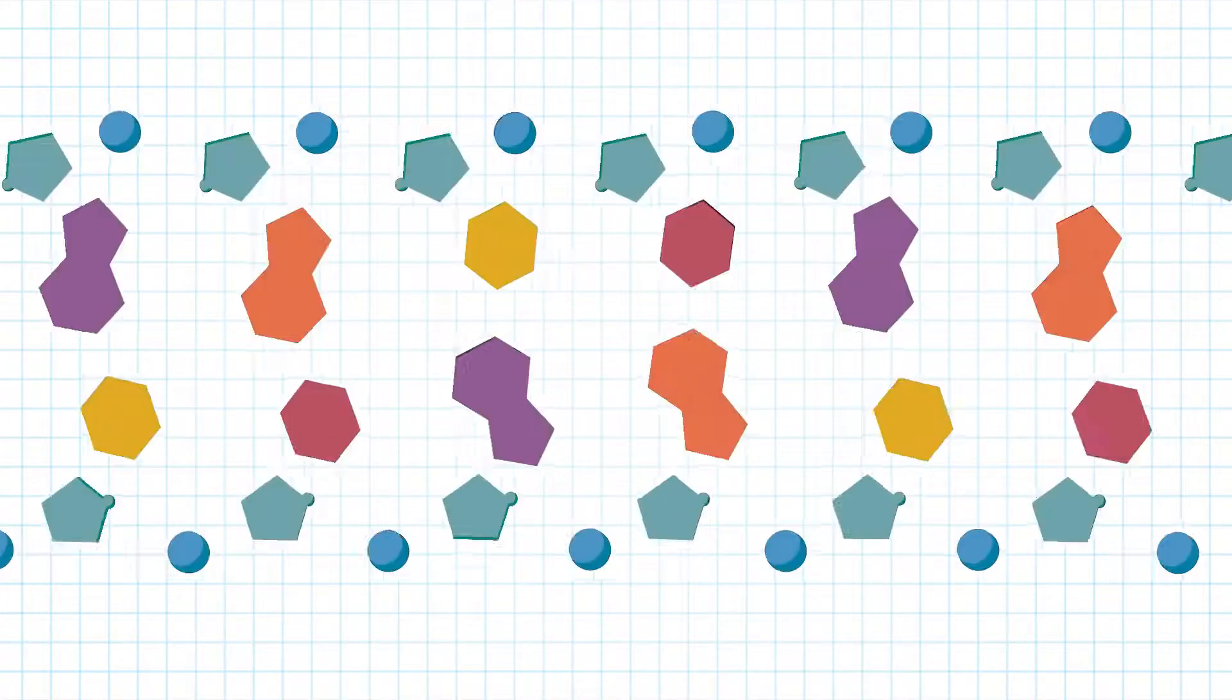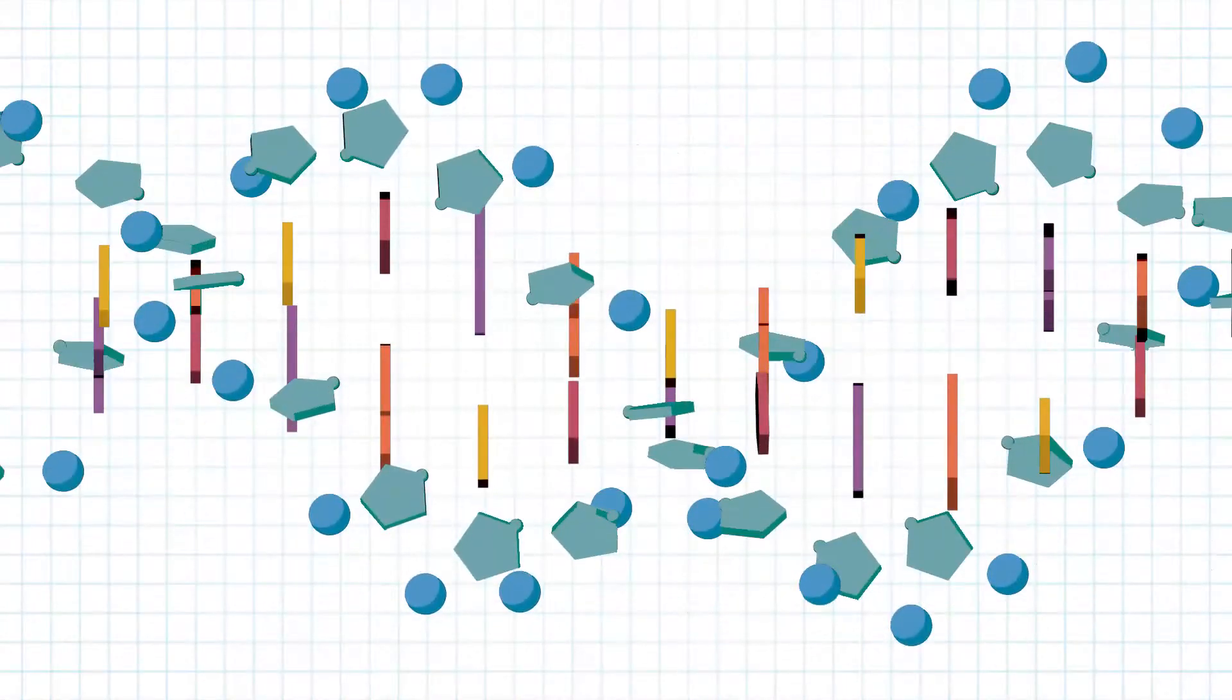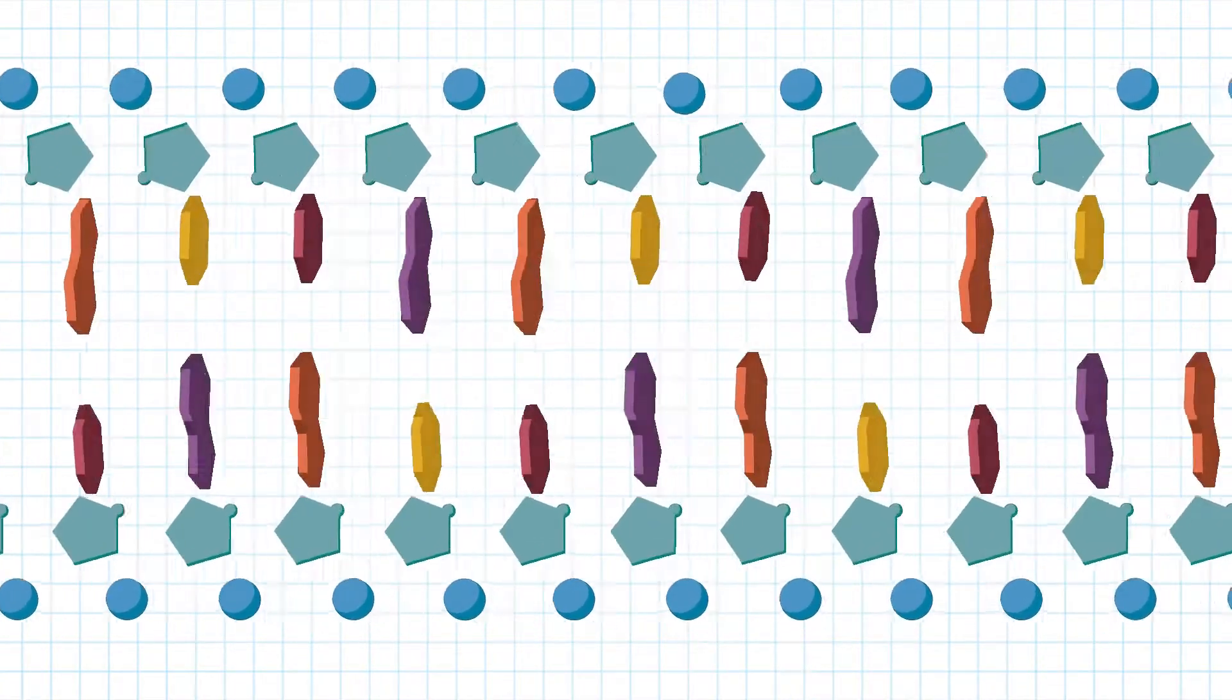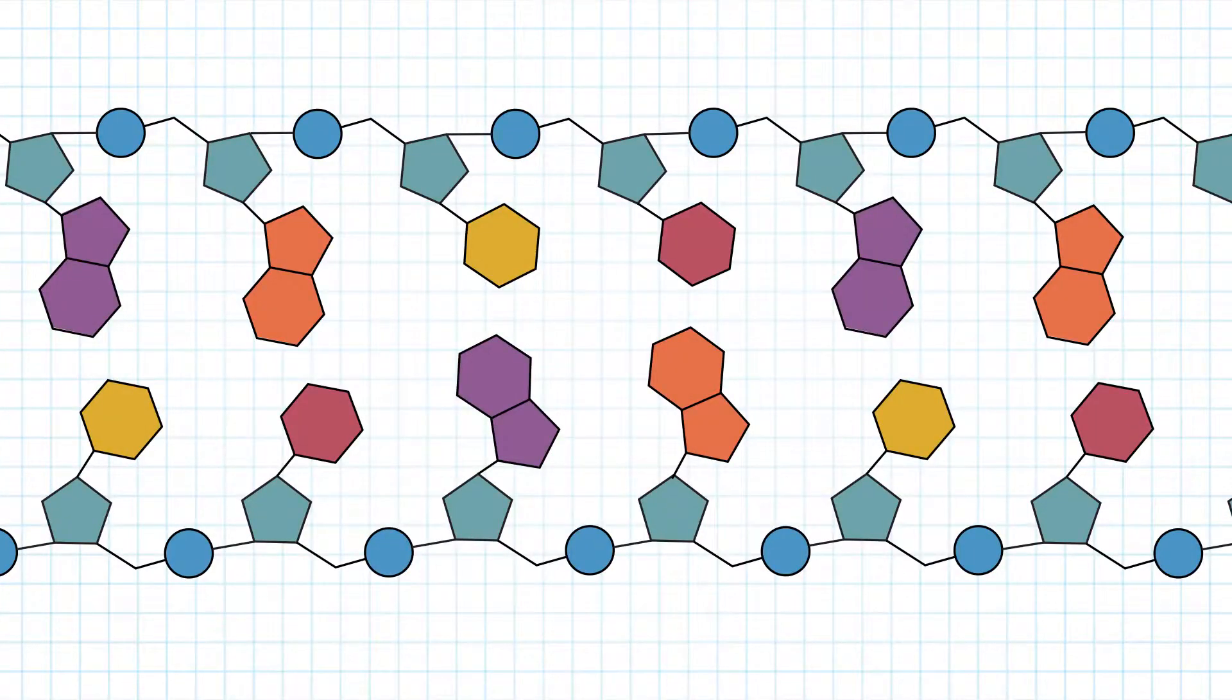Keep in mind that this double-stranded DNA is still a double helix and we have simplified the representation by flattening and unwinding the helix here to better see the atomic structure.